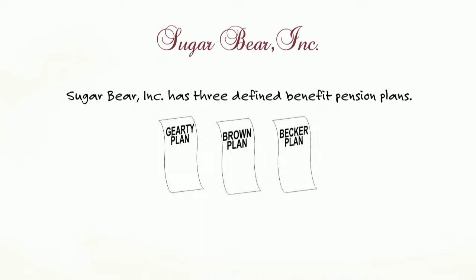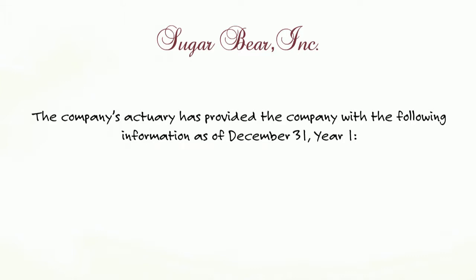All right scholars, in this exercise we're going to talk about my good friend Peter Olinto and his new business venture, Sugar Bear Inc. It has three defined benefit plans. The reason for that is you may have had executives who created their own plan 20 years ago, they were around for a number of years, then they left, a new executive team came in, they created their own separate pension plan, and there may be one for the rank and file as well.